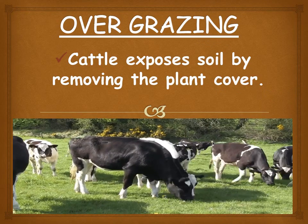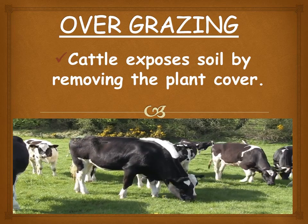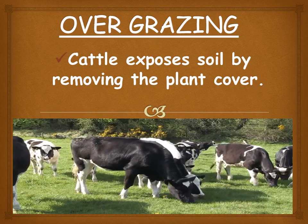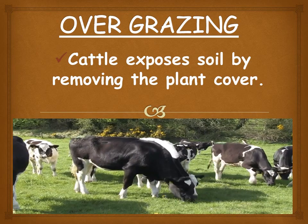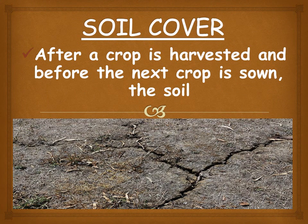Overgrazing by cattle exposes the soil by removing the plant cover, causing an increase in soil erosion. After a crop is harvested and before the next crop is sown, the soil remains bare and can be easily eroded by wind and water. To prevent this, farmers either grow grass or cover the land with dry vegetation.